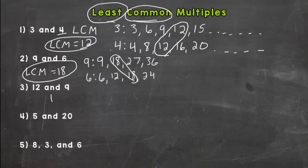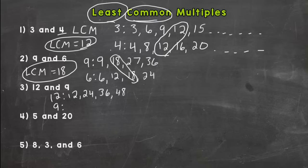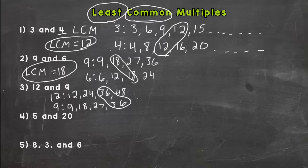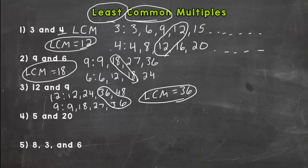Number three — we have twelve and nine. For twelve: twelve, twenty-four, thirty-six, forty-eight. For nine: nine, eighteen, twenty-seven, thirty-six. It looks like we have a match at thirty-six. Any less than that? No, it doesn't look like it, so our LCM for twelve and nine is thirty-six.